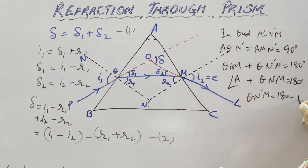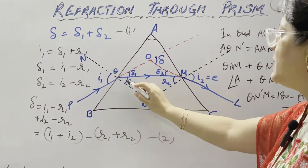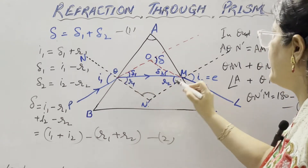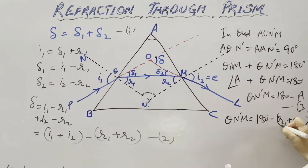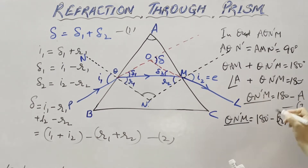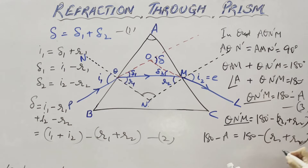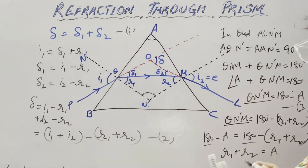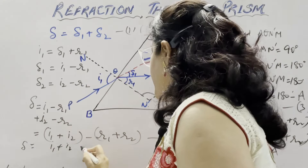So QN'M equals 180 minus A. Now in triangle QN'M, using the angle sum property, QN'M equals 180 minus (R1 plus R2). Since both expressions equal QN'M, we get: 180 minus A equals 180 minus (R1 plus R2), which simplifies to R1 plus R2 equals A.